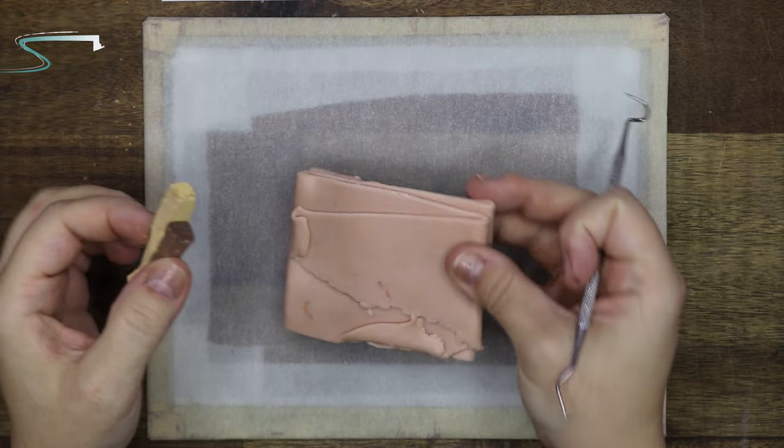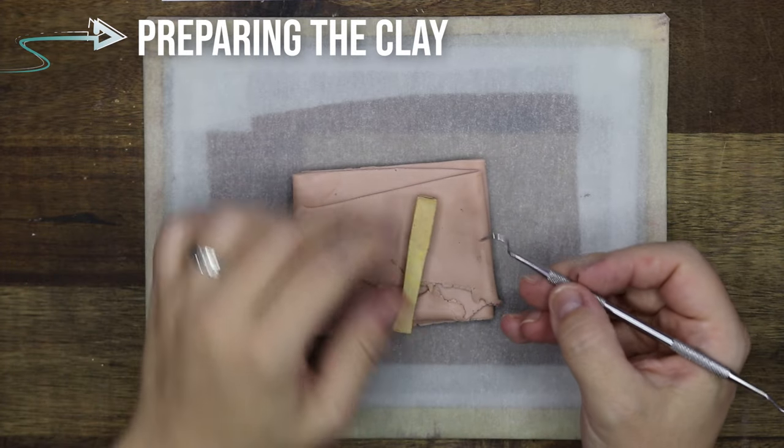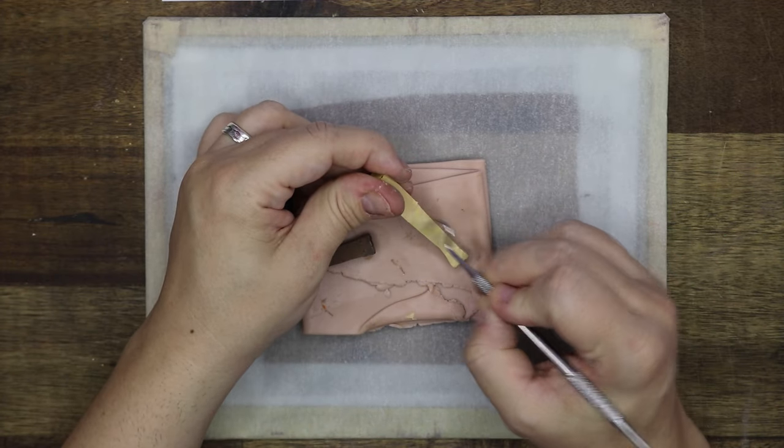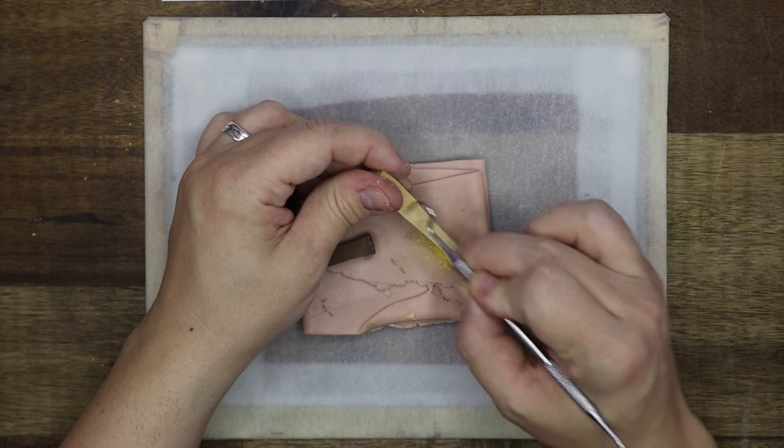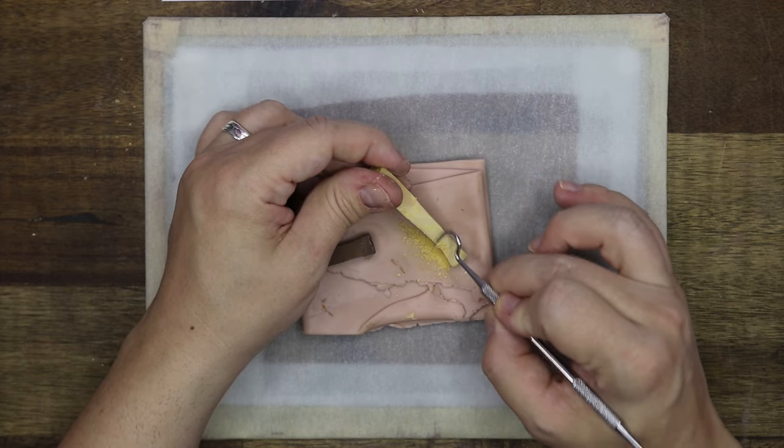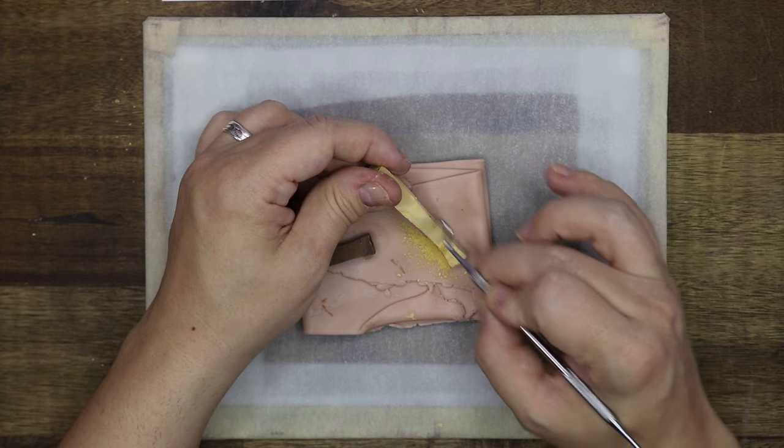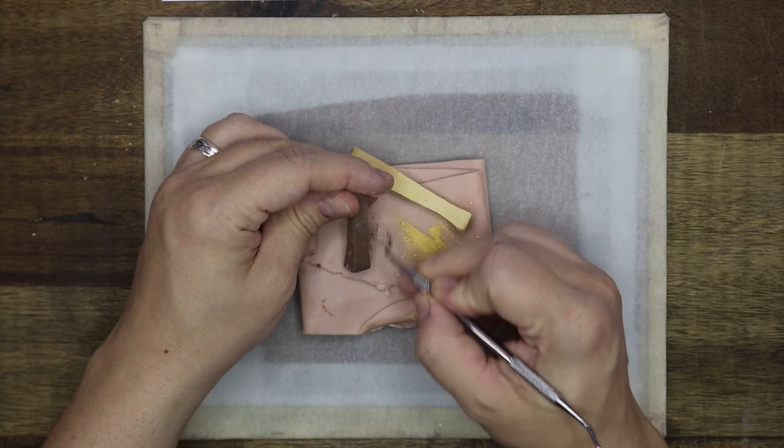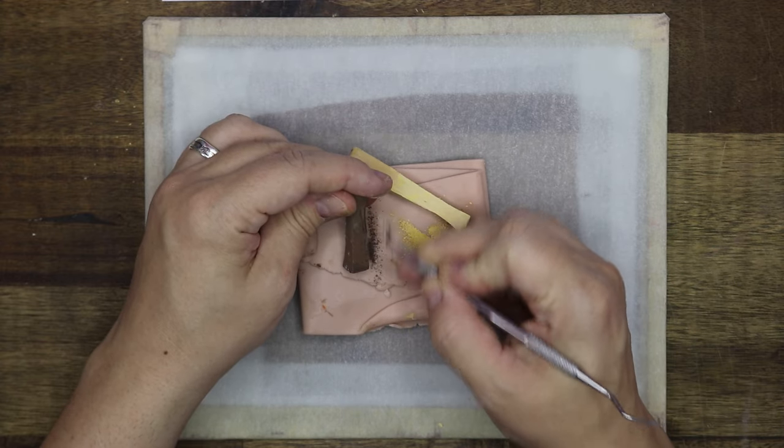If you already have coloured clay, then you can skip this chalk pastel part. If you don't, then keep watching. I'm going to scrape some of the chalk pastels onto the clay to make it the colour I want it to be for the baked goods. Go slow with adding colour, you can always add more if needed.